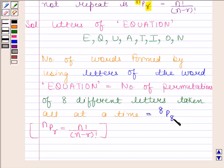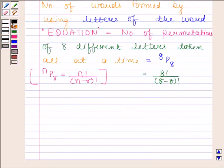We know that nPr is equal to n factorial upon n minus r factorial. Here, n is equal to 8 and r is also equal to 8. So, by using this formula, 8P8 is equal to 8 factorial upon 8 minus 8 factorial.